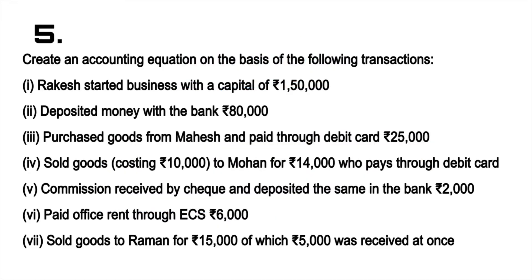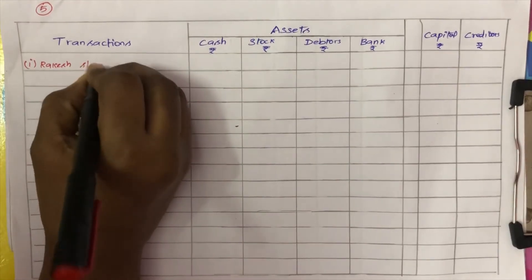Exercise 5: Create an Accounting Equation on the basis of the following transactions. Rakesh started business with a capital of Rs. 1,50,000. Deposited money with the bank Rs. 80,000. Purchased goods from Mahesh and paid through debit card Rs. 25,000. Sold goods costing Rs. 10,000 to Mohan for Rs. 14,000, who pays through debit card. Commission received by cheque and deposited the same in the bank Rs. 2,000. Paid office rent through ECS Rs. 6,000. Sold goods to Raman for Rs. 15,000 of which Rs. 5,000 was received at once.